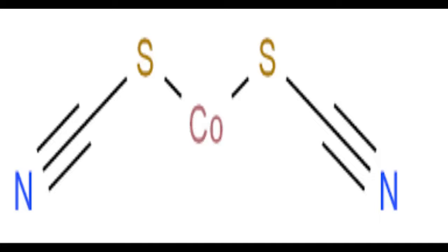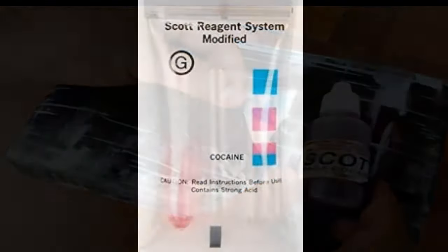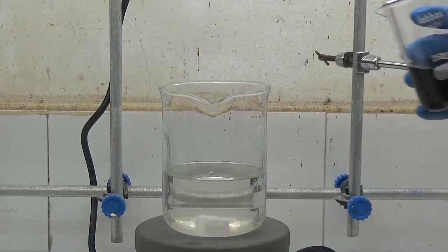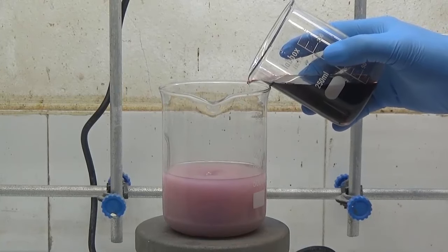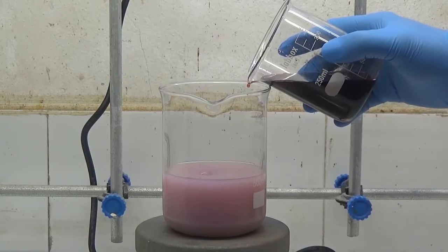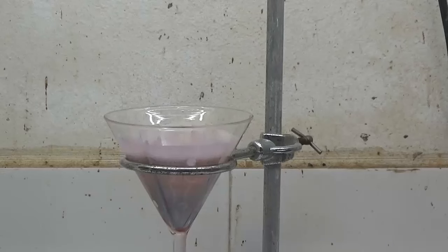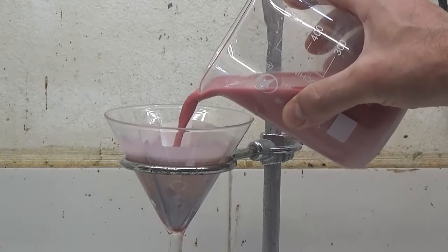In this video, let's see how to obtain cobalt thiocyanate. Cobalt thiocyanate in acid medium is used in the Scott test, a widely used test for early alkaloid detection. To obtain cobalt thiocyanate, cobalt sulfate and barium thiocyanate are reacted in the cold. The result is a barium sulfate precipitate that is separated by filtration, while the cobalt thiocyanate remains soluble.